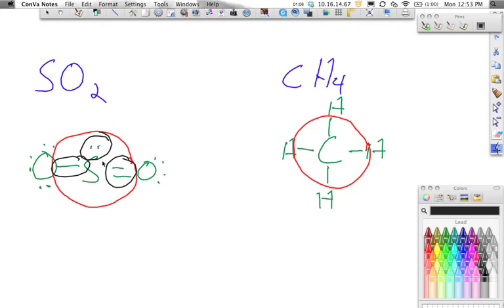We should have the VSEPR chart memorized. If we have three charged clouds and one lone pair, it gives us a bent shape. That's the shape for sulfur dioxide.